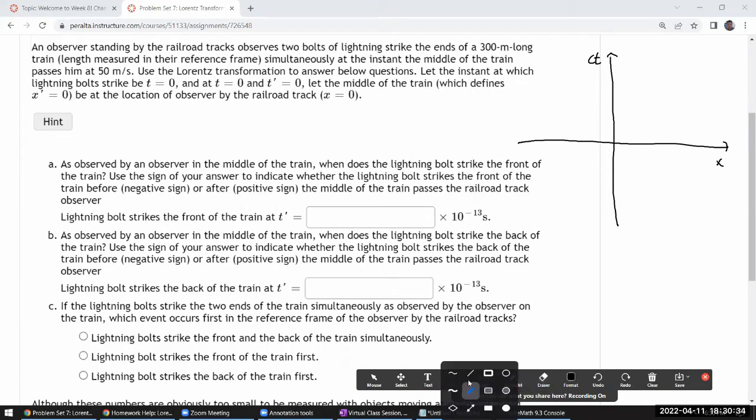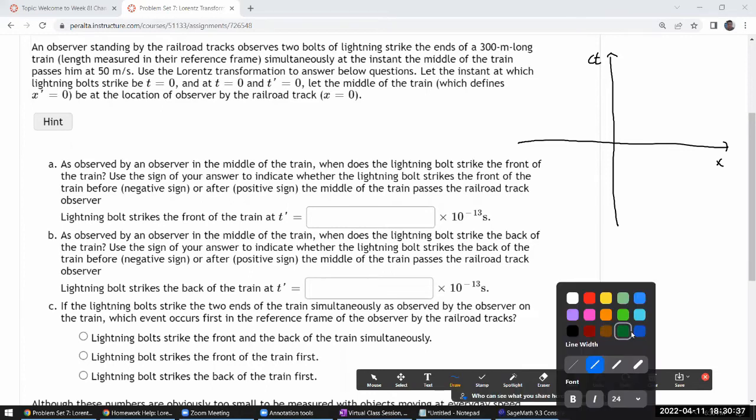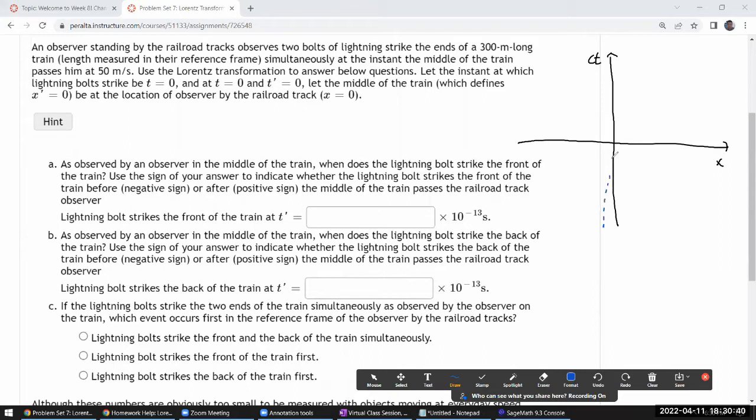So this is the world line of the middle of the train that's going to be passing by this point at time equals zero. So I have a similar world lines at this would be the back of the train and similar world line at the front of the train. So at time equals zero, my front of the train is at time zero position 150 meters and my back of the train is at time zero minus 150 meters. All this is in the inertial reference frame of the observer standing by the railroad tracks.